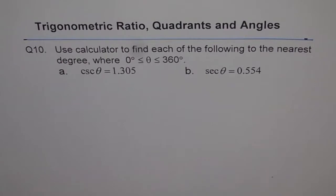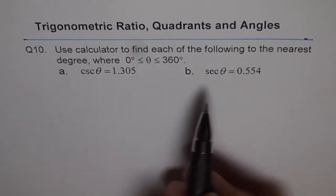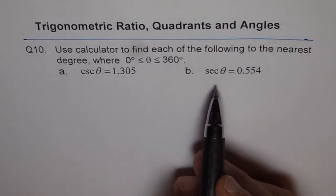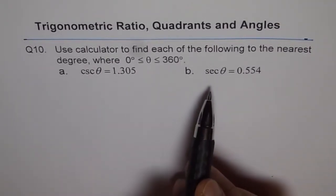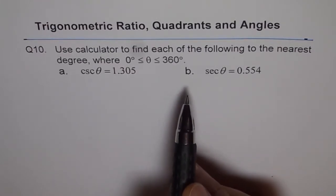Now, this question is kind of typical since on calculator, you don't have cosecant and secant. You have sine, cosine and tangent. And these are the reciprocals of cosecant and secant. So that's why this is a very interesting question to try to understand.